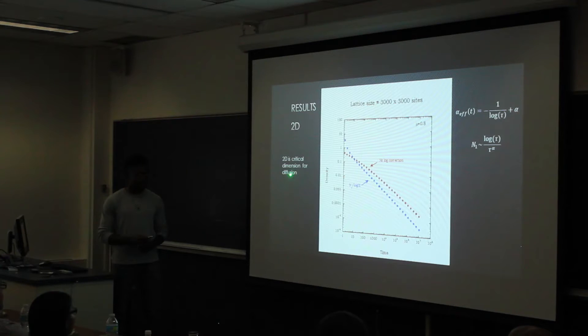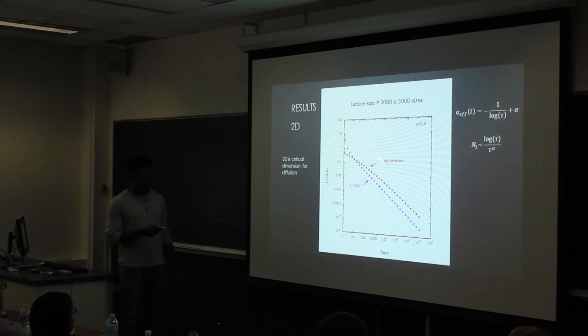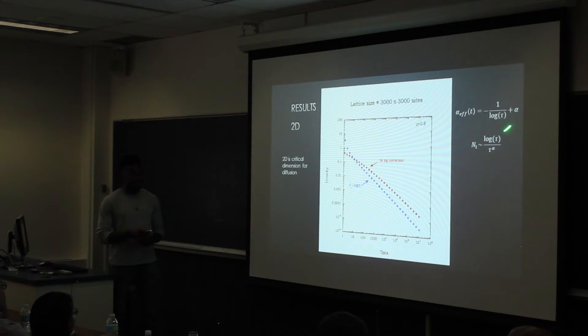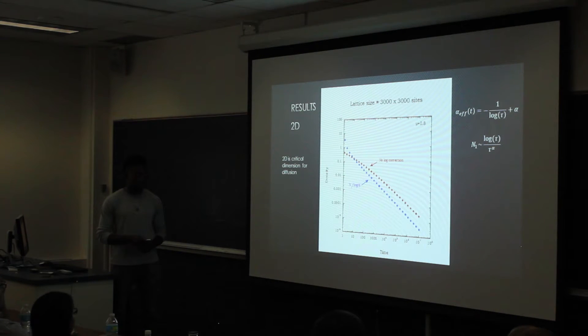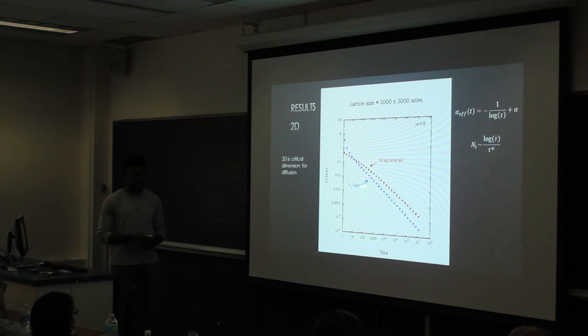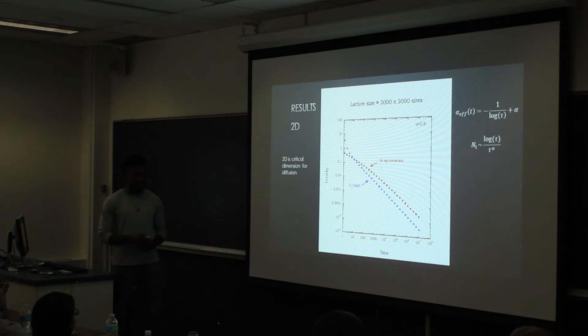Specifically, two dimensions is also a critical dimension for diffusion. So this red line right here is the normal data graph just by itself. And instead of n1 going as t to the minus alpha, it technically goes as n1 log t, t to the minus alpha. Just because two dimensions is the critical dimension for diffusion. And so we have to introduce this kind of log correction when we divide the density by log t to make up for that correction.